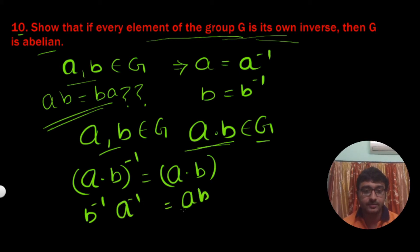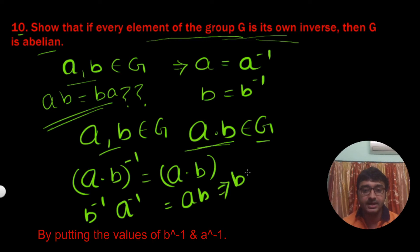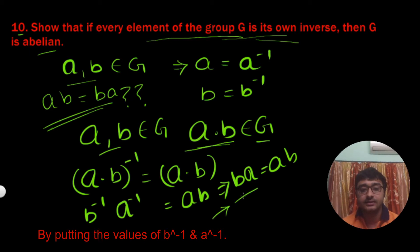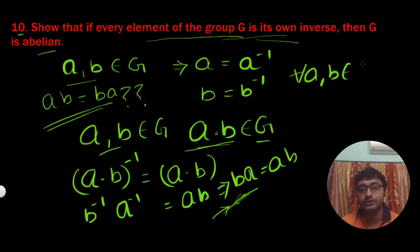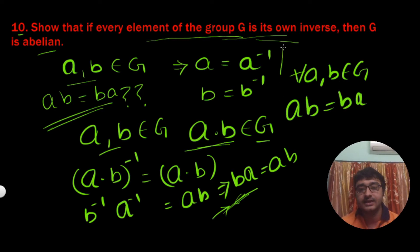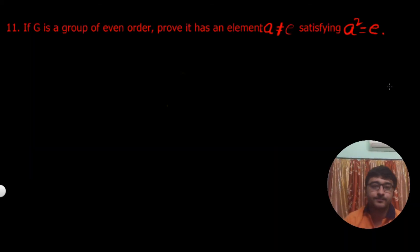Now we can write this as B inverse A inverse equals AB, which implies BA equals AB. This means the group is abelian, because for all A, B belonging to G we have AB equals BA. Thus the group is abelian.